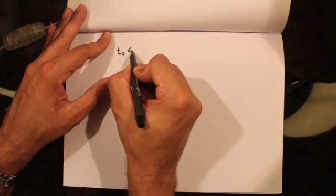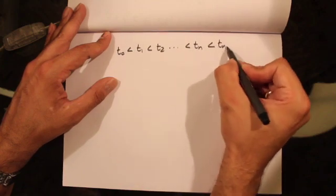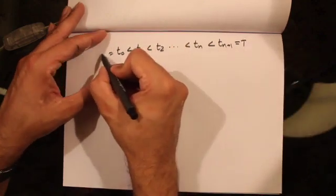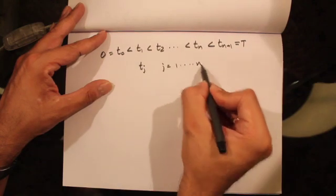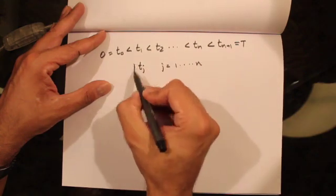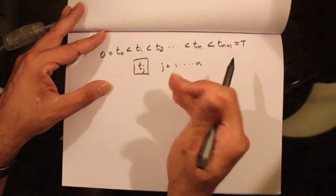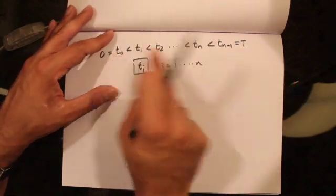Now let's talk about stocks that pay dividends in lumps. So far we've been talking about stocks that pay continuous dividends, but now we're going to shift our attention to stocks that pay dividends at certain points in time. Let's assume that t0 < t1 < t2 < ... < tn < tn+1, where tn+1 equals T and t0 equals 0. For all tj's where j ranges from 1 to n, these are the dates when we get a dividend — t1, t2, through tn are dividend dates. t0 and tn+1 are not dividend dates.